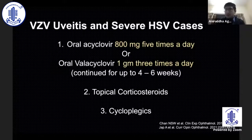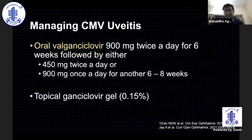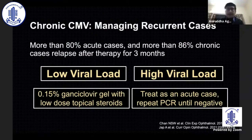For VZV uveitis, the full dose is acyclovir 800mg five times a day or valacyclovir 1 gram three times a day — at least four to six weeks initially, then tapered. CMV is the most difficult to manage, requiring long-term valganciclovir 900mg twice a day followed by a taper. Topical ganciclovir gel also works well, and can be used in herpes simplex or varicella anterior uveitis. Chronic CMV is seen in more than 80% of patients, with relapses. Quantitative PCR helps determine viral load: low viral load can be managed with topical gel, but high viral load during relapse requires systemic therapy until PCR is negative.